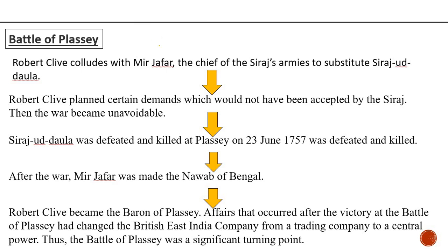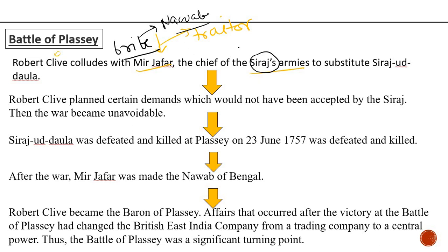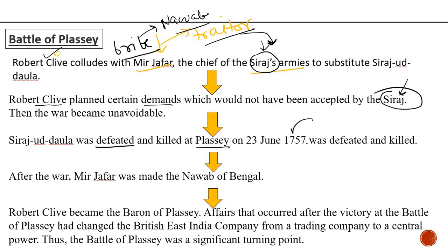Robert Clive colluded with Mir Jafar — he took the support of Mir Jafar, who was the chief of Siraj's armies and a traitor. The Britishers bribed Mir Jafar, promising that once he helped them remove Sirajuddaula from power, they would make him the next Nawab. Mir Jafar wanted to become Nawab, so he cheated Sirajuddaula and sided with the Britishers, which is why Sirajuddaula lost the battle. Robert Clive planned certain demands which would not have been accepted by Sirajuddaula, making war unavoidable. Sirajuddaula was defeated and killed at Plassey on 23rd June 1757.